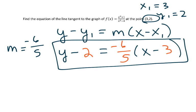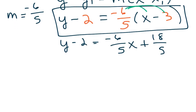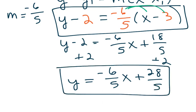You can also simplify this. It's not necessary, but sometimes we do want it in slope intercept form, and so to simplify this, you would just distribute. So I have y minus 2, negative 6 fifths x plus 18 fifths, and if I want to simplify some more, I'm going to add 2 to both sides, and I get y is equal to negative 6 fifths x plus 28 over 5. So in either case, you can give it as a point slope equation or slope intercept, but that is the equation of a line tangent to that function.